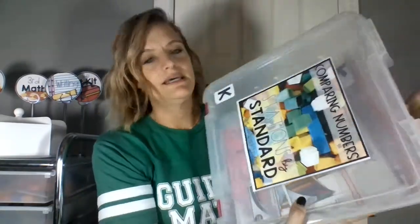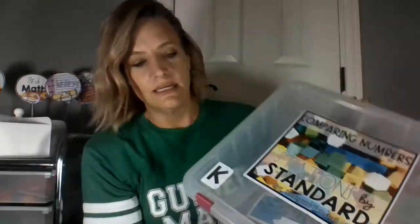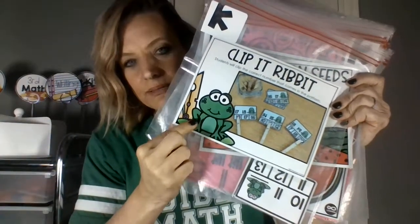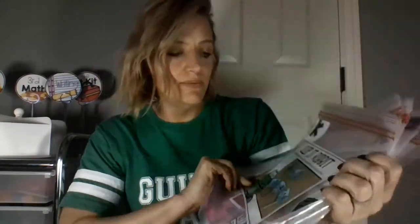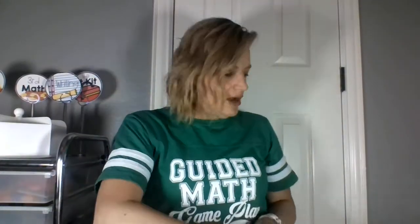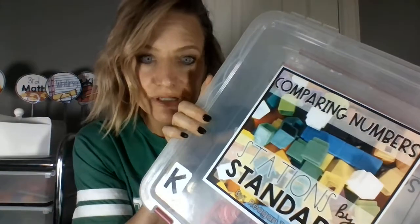Here's another peek at those for Kinder — here's the Comparing Numbers unit. These labels are free downloads in my store. I just like to put them in Ziplocs, and I like the scrapbooking boxes because they hold the baggies. The activity goes there — fun little tip. You can print the covers at 80% if you want. So again, it's going to give you 15 centers by strand. This was the Comparing Numbers strand for Kinder, and those are called Stations by Standard.